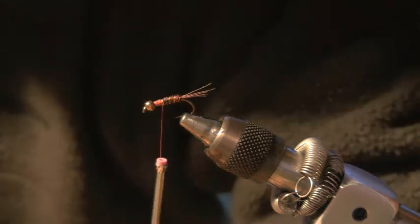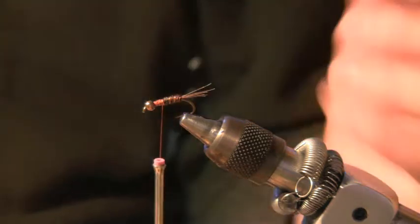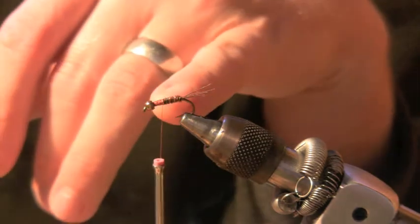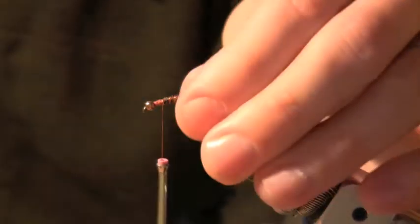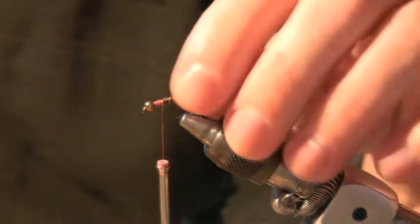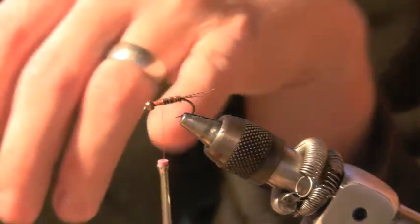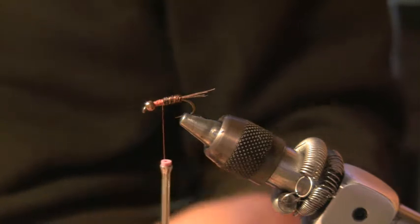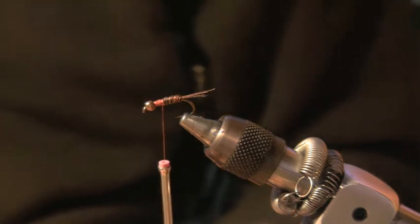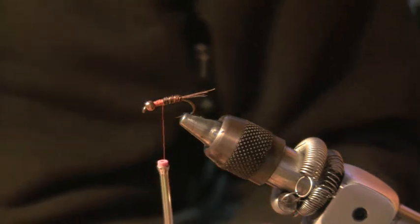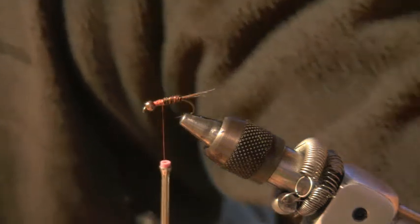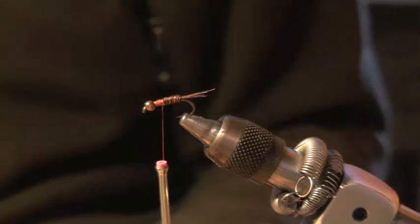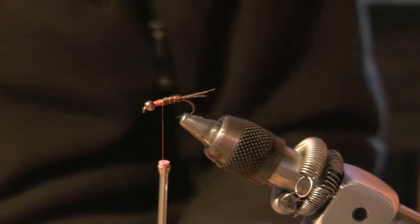Now right here you can do a bunch of different things. You can put, I've seen people put for the hatchback or the back or the wing casing if you want to get technical. Now I've used scud back, I've used pheasant tail, turkey, flashback. So you can kind of really get, do whatever you need to do and be a little bit creative.